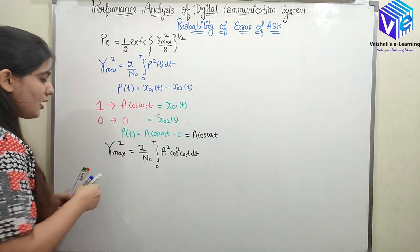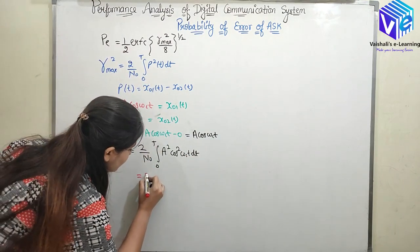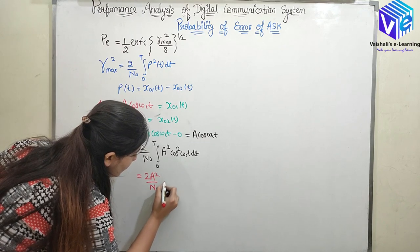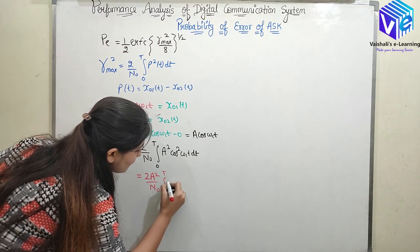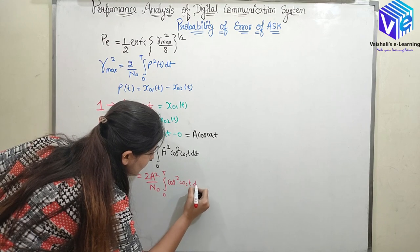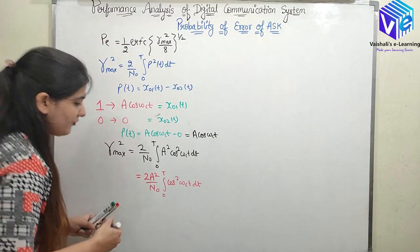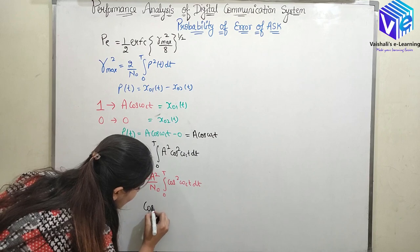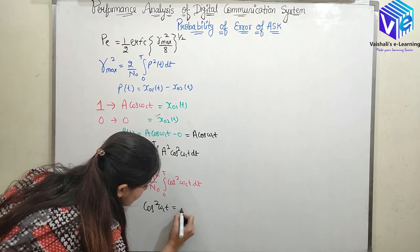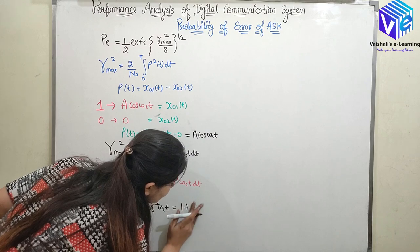Since A is a constant we can take it outside, giving (2A²/N₀) × integral from 0 to T of cos²(ωc·t) dt. Now I know the formula: cos²(ωc·t) = (1 + cos(2ωc·t)) / 2.